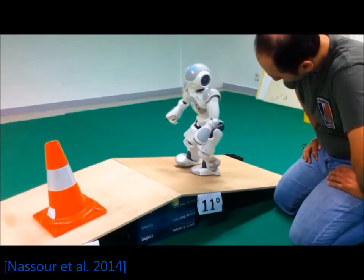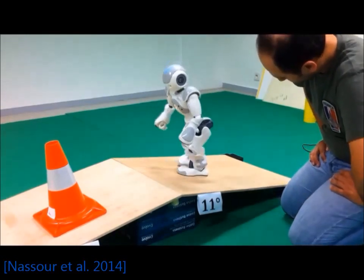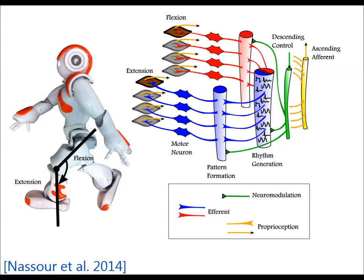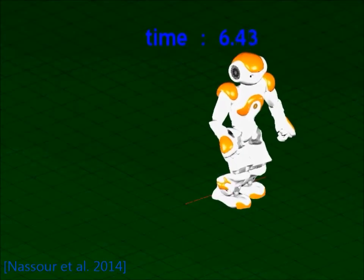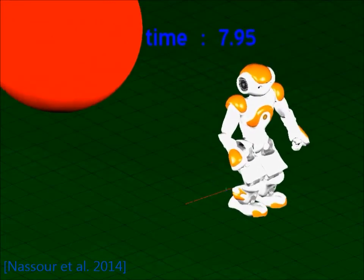To show the switching between rhythmic and non-rhythmic behaviors, the model was tested to react against an external disturbance force during walking. Once the robot is subjected to the disturbance, the accelerometer output in the walking direction exceeds a predefined threshold, which triggers the switching into the designed recovery behavior.